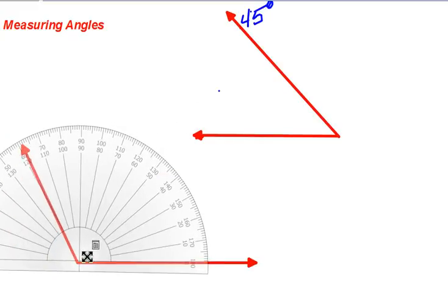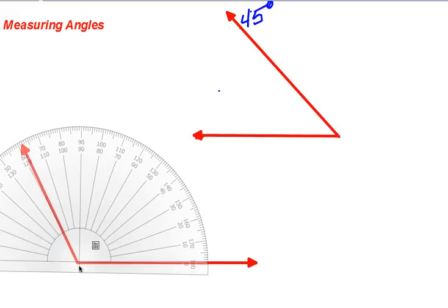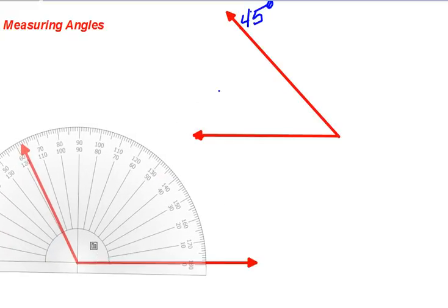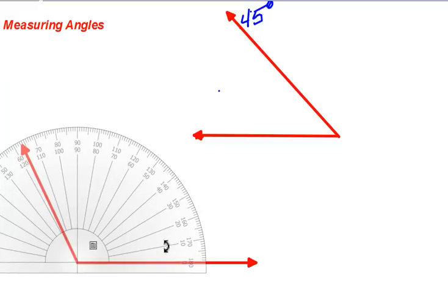To measure this angle, again, make sure that your vertex is lined up with the zero and ninety degrees here. Rotate if needed until it's just right. Start counting at zero. Now, the ray is on this side this time, but there's a zero on this side.